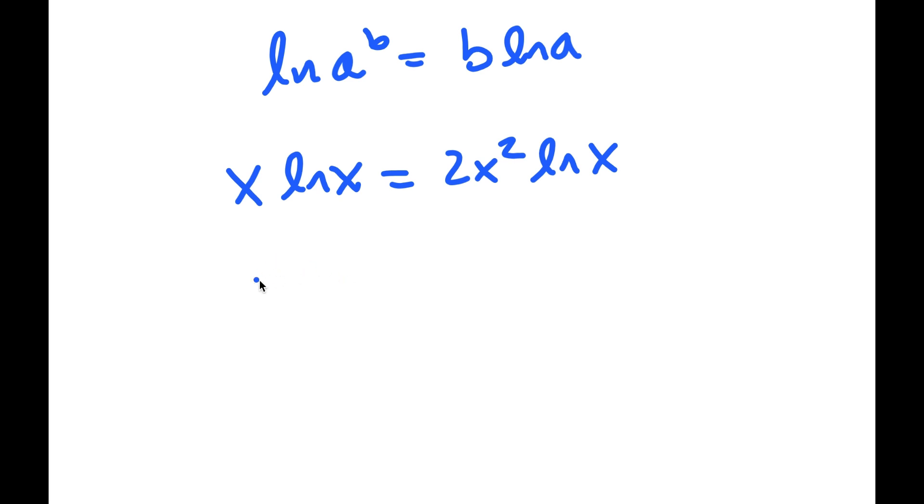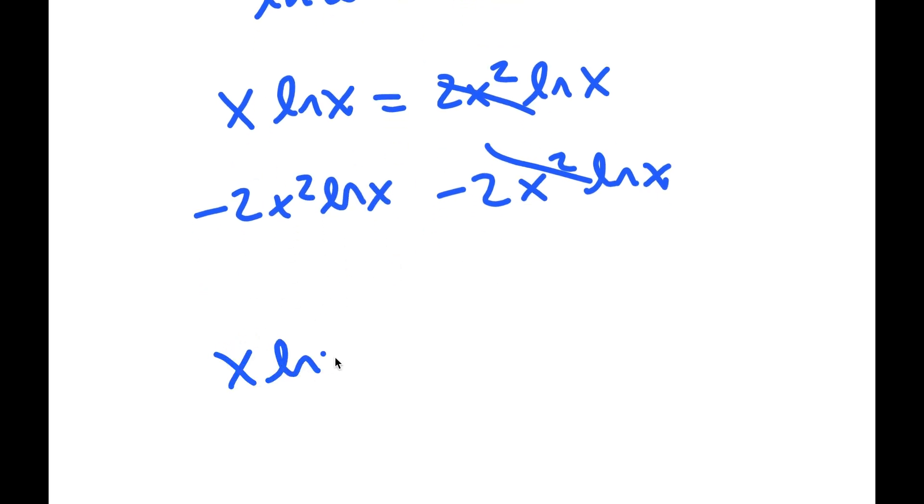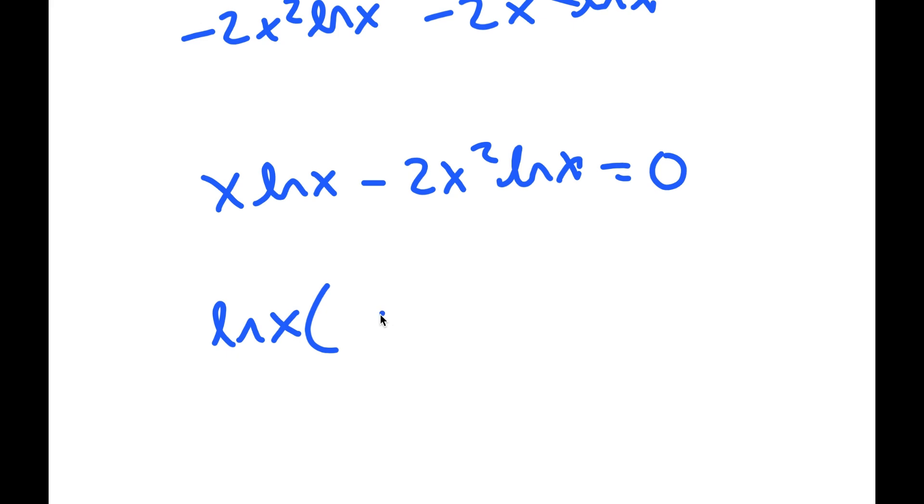Now I'm going to subtract 2x squared times ln x on both sides. So I get x times ln x minus 2x squared times ln x is equal to 0. And now if I factor out ln x, I get ln x times x minus 2x squared is equal to 0.